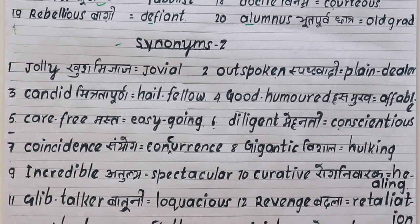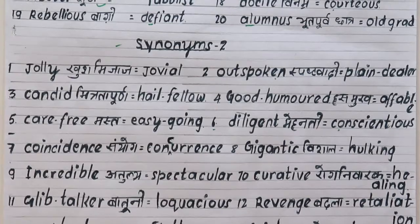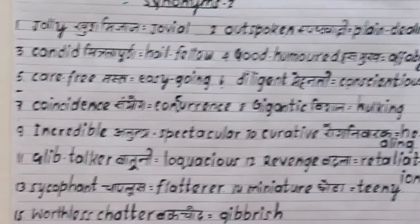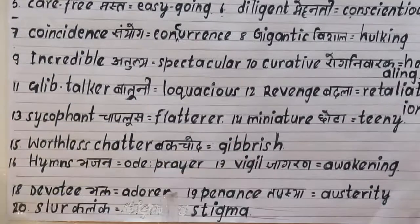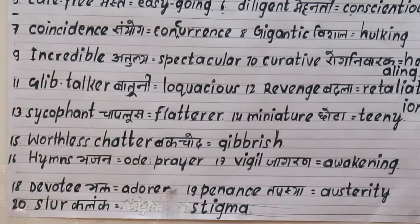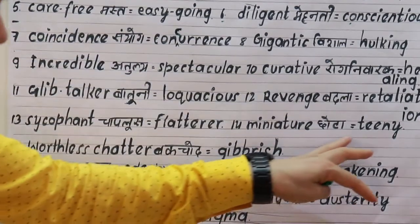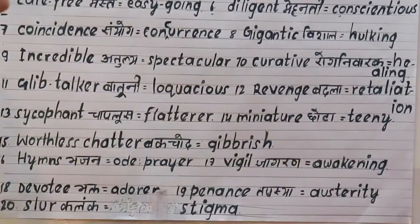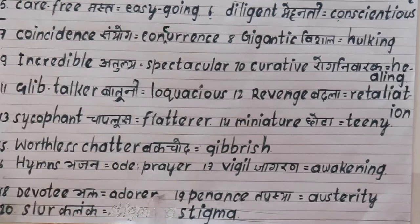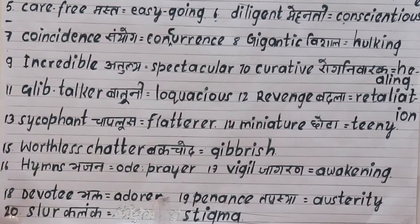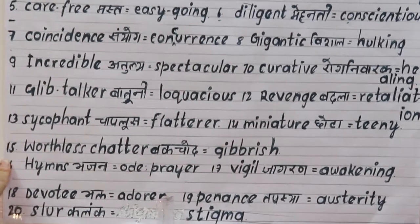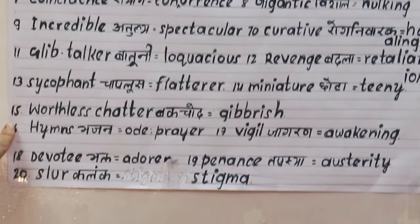Thirteenth is 'sycophant', meaning a flatterer or someone who flatters excessively. The synonym is 'flatterer'. For example: you are a sycophant, you are a flatterer. Fourteenth is 'miniature', meaning very very small. The synonyms are 'teeny' and 'tiny' — both meaning very very small.